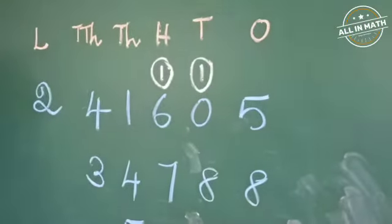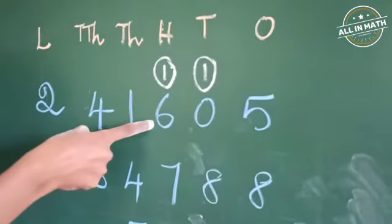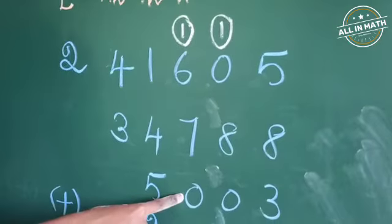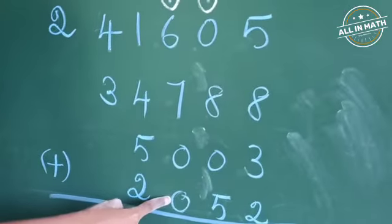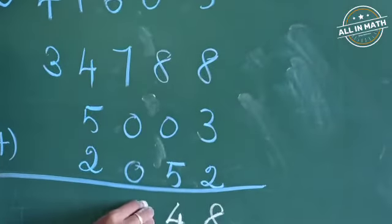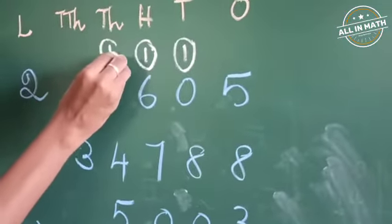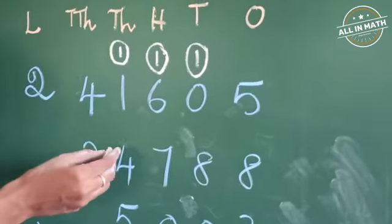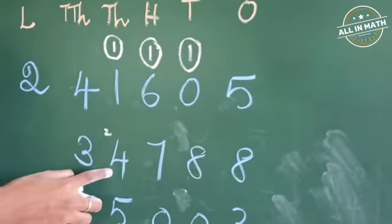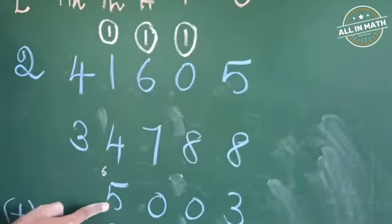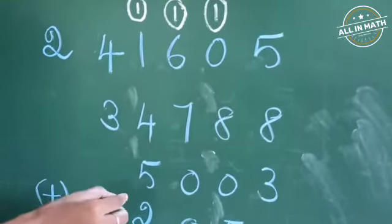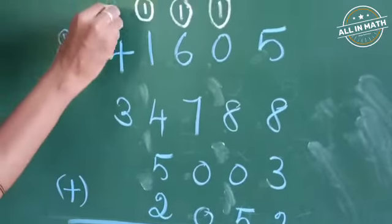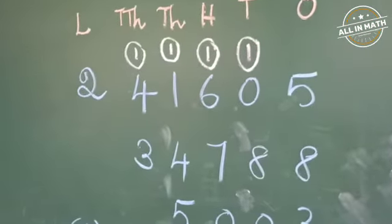Now we are going to add the numbers in the 100's place. 1 plus 6 is 7. 7 plus 7 is 14. 14 plus 0 is 14. 14 plus 0 is 14. So write 4 in the 100's place and take 1 as carry over in the 1000's place. Now we are going to add the numbers in the 1000's place. 1 plus 1 gives 2. 2 plus 4 gives 6. 6 plus 5 is 11. 11 plus 2 is 13. So write 3 in the 1000's place and take 1 as a carry over in the 10,000's place.